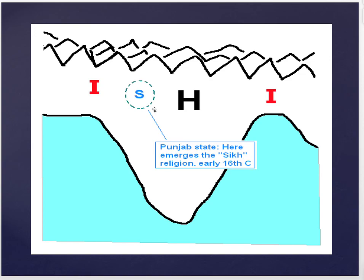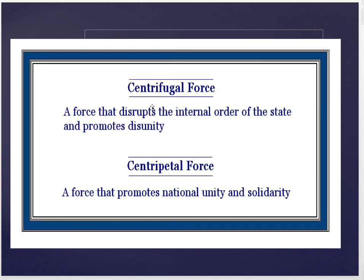So an overview of the Indian subcontinent from the 10th century onward: you have a massive Hindu population core, a Muslim population to the northeast and to the northwest, and a transitional — historically new, 500-year-old — religion based in Punjab state called the Sikh religion. There are terms you want to know from the text: centrifugal force — a force that disrupts the internal order of the state and promotes disunity. Religion has been a centrifugal force on the subcontinent, and you'll see the implications of that momentarily.